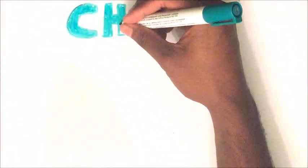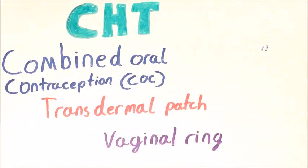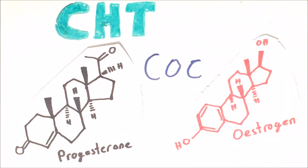Combined hormonal therapy consists of combined oral contraceptives, a transdermal patch, and a vaginal ring. The combined oral contraceptive contains both progestogen and oestrogen.